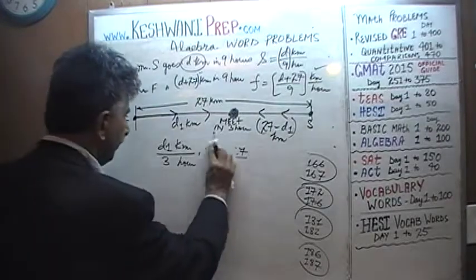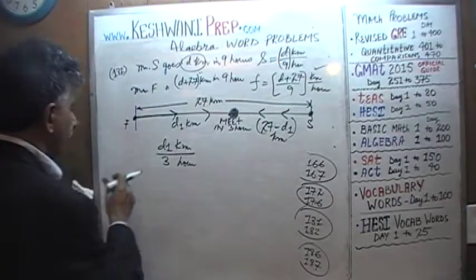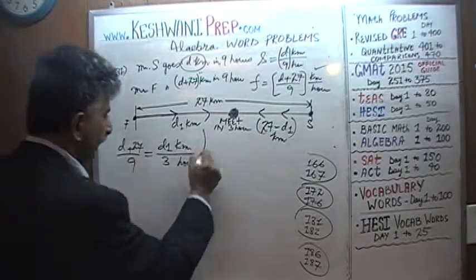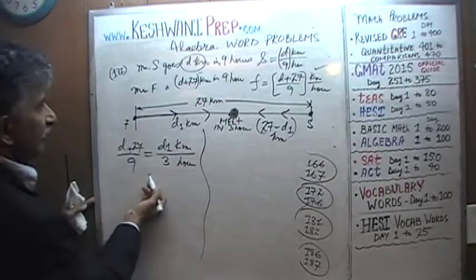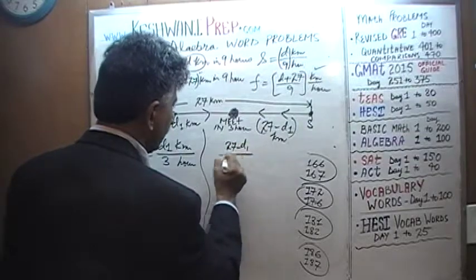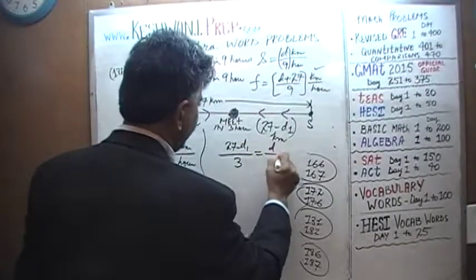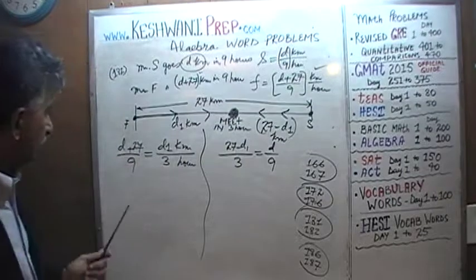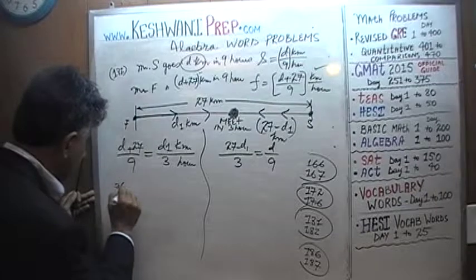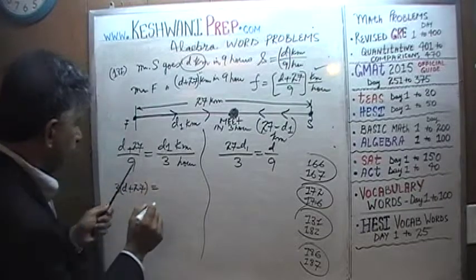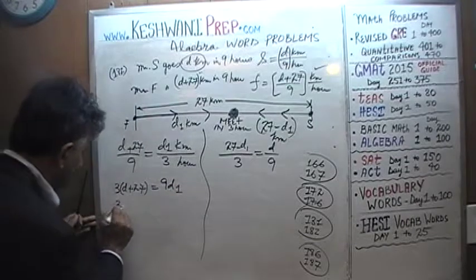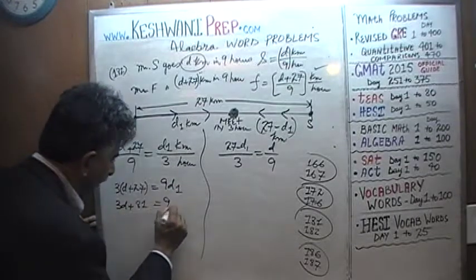So we have two equations: (D + 27) over 9 equals D1 over 3, and (27 − D1) over 3 equals D over 9. Cross-multiplying the first: 3 times (D + 27) equals 9 times D1, which gives 3D + 81 = 9D1.